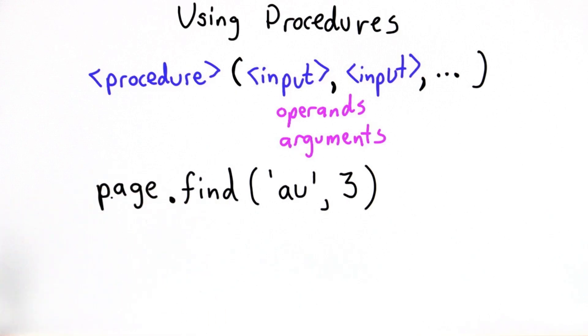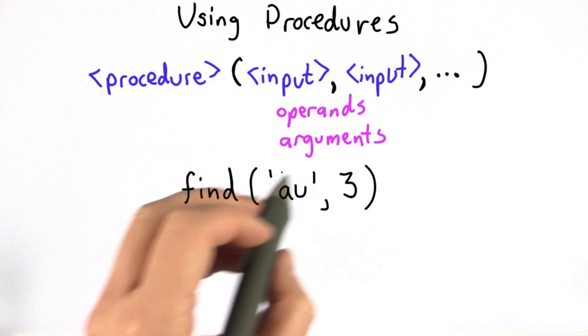For all the procedures that you define yourself, we won't have any object to invoke them on. We'll just have the procedure to call, and the arguments, or operands, or inputs, as you like to call them, to pass in.